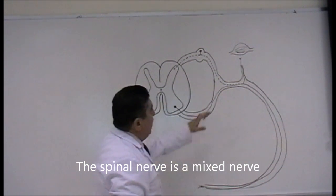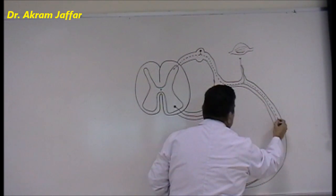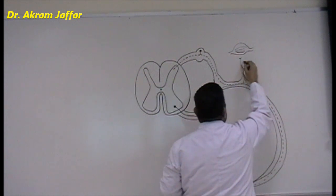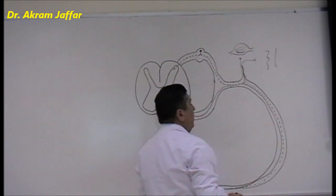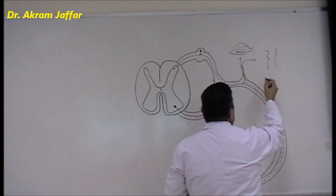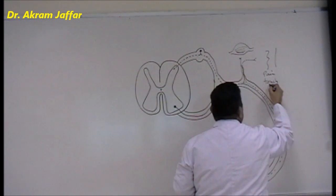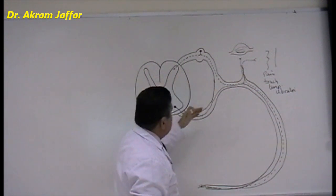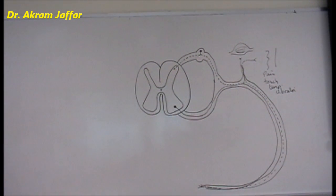The spinal nerve contains both motor fibers and sensory fibers — it is a mixed nerve. These are distributed through the anterior primary ramus and the posterior ramus of the spinal nerve, reaching the skin. The sensory fibers receive somatic sensations including pain, touch, temperature, and vibration. The sensory fibers relay in the posterior horn, and the motor fibers have their cell bodies in the anterior horn cells. This concludes the somatic nervous system.